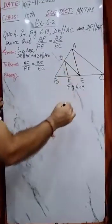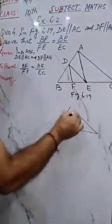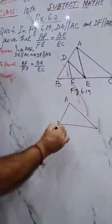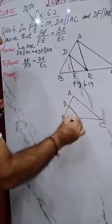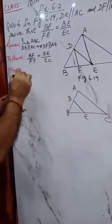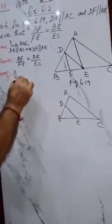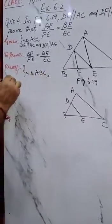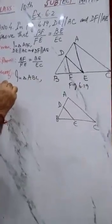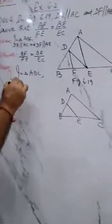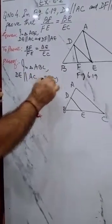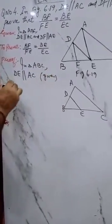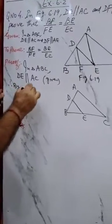We need to take a triangle in which DE is parallel to AC. So we will take triangle ABC in which DE is parallel to AC. Therefore, we can apply BPT, basic proportionality theorem.